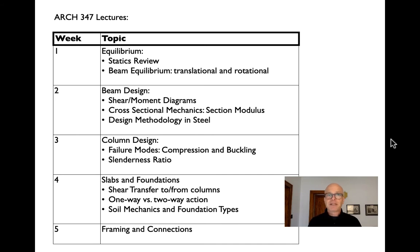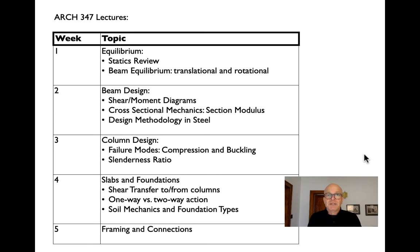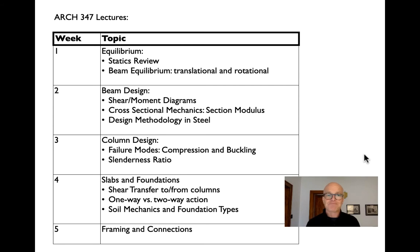We'll switch and talk about column design. We've touched on this in previous classes, but we'll go into detail about the real problems that make columns more difficult to design than simply compression. We'll do specifications and design of columns using what we call the slenderness ratio methods. Then we'll look at the two structural elements at opposite ends: slabs, which pick up loads and take them to beams, and foundations, which take loads from columns and spread them out over soil below. We'll delve deeply into foundations and look at soil mechanics and the types of foundations for each soil type.